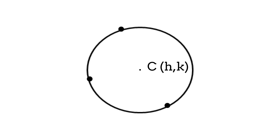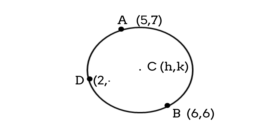The given points lie on the circumference of the circle and can be denoted as: A equals (5, 7), B equals (6, 6), and D equals (2, -2). Let's connect the center to the given points A, B, and D.